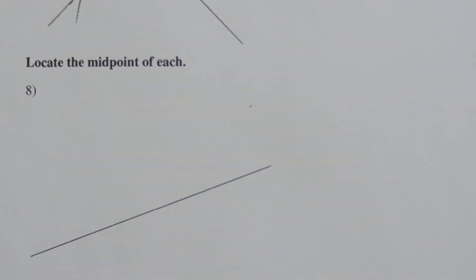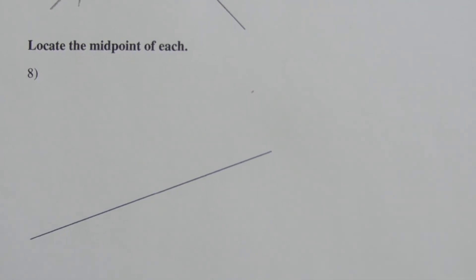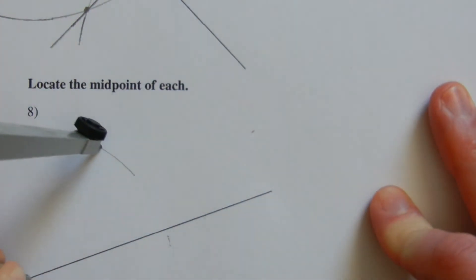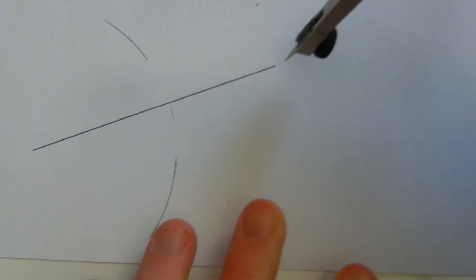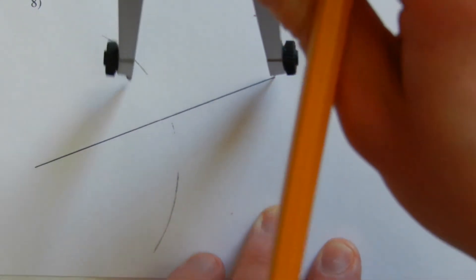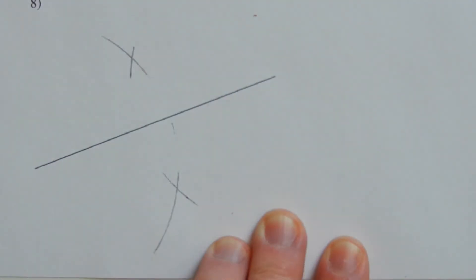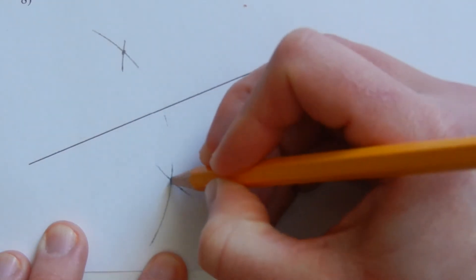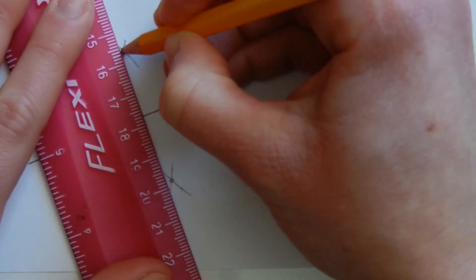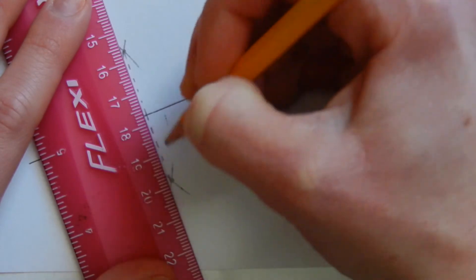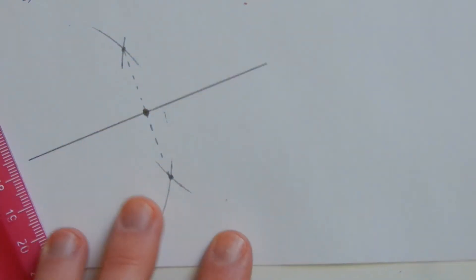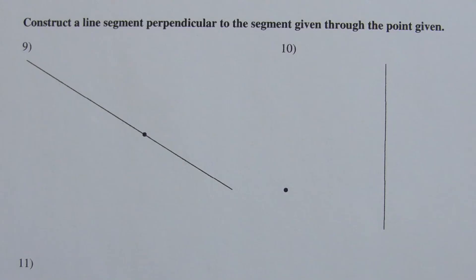Number eight: locating the midpoint. The midpoint is where the perpendicular bisector intersects our original line. Repeating the process from number seven, we place the compass on one endpoint, go a little more than halfway, make a mark above and below — making the arc a bit larger this time. Then go to the other endpoint, make a mark above and below. Where those two arcs intersect are points along the perpendicular bisector. We draw those lines and mark where they intersect the original segment — that is the midpoint.